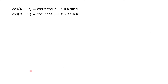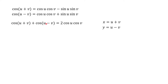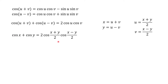Now we look at cosines. Starting with cosine of a sum and cosine of a difference, if we add them the second term in both formulas cancels out. Again using u + v = x and u − v = y, and expressing u and v through x and y, we plug everything in and get the sum-of-cosines formula. Similarly, subtracting the second formula from the first gives the difference-of-cosines formula.